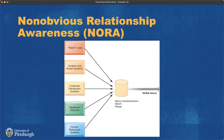This is another graphical representation of NORA — watch lists, incident and arrest records, customer transaction systems. If you're on a watch list and you went to get an MTO at Sheetz, you could be spotted. Your credit card transactions are just as telling a sign of where you were as your cell phone records are. And if you paid in cash somewhere, that's also pretty easy to figure out.